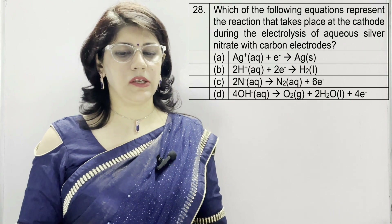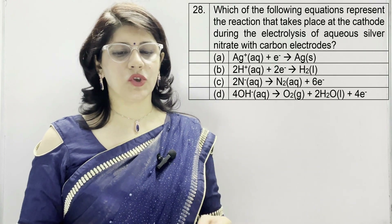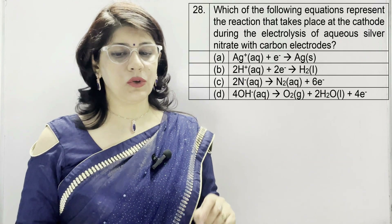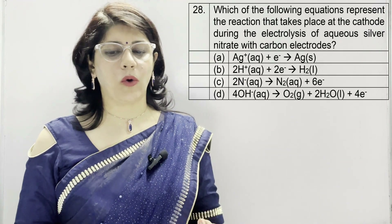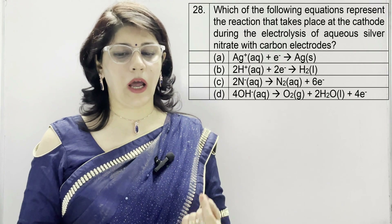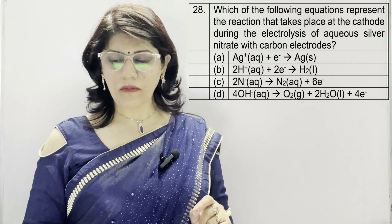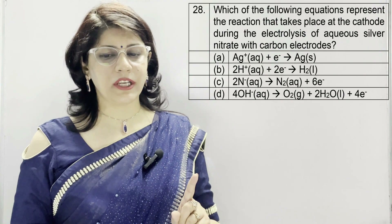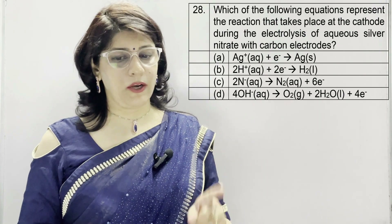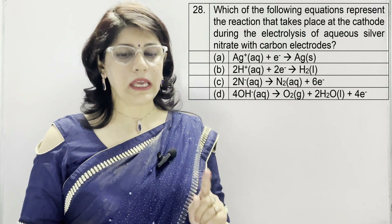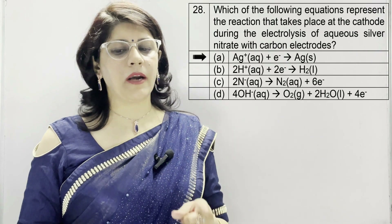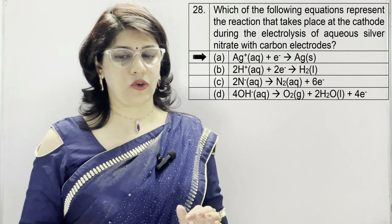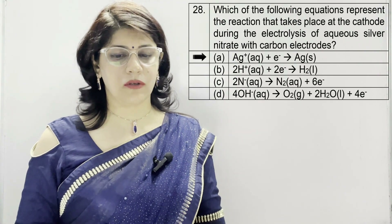In question number 28: which equation represents the reaction at the cathode during the electrolysis of aqueous silver nitrate with carbon electrodes? At the cathode, reduction takes place — gain of electrons. The correct option shows Ag+ + e- → Ag (solid), because gain of electrons is occurring.